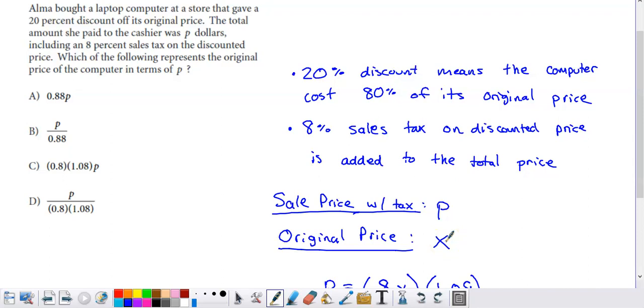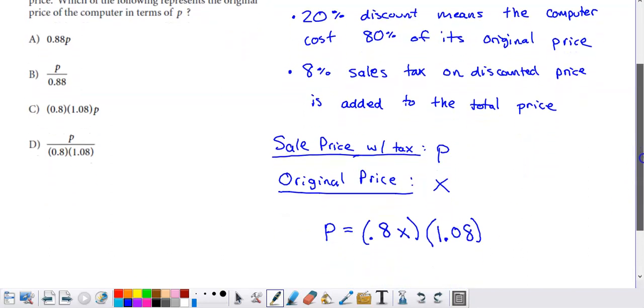Normally, what you're trying to find is you're trying to figure out what the sale price plus the tax is. In this case, the sale price plus the tax is P. And what we're trying to determine is we're trying to determine the original price, which is why I define that as a variable.